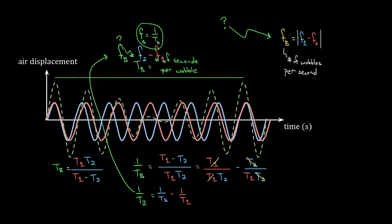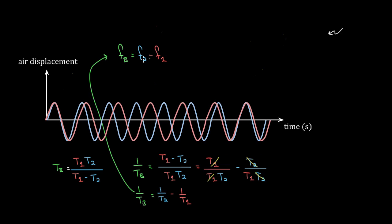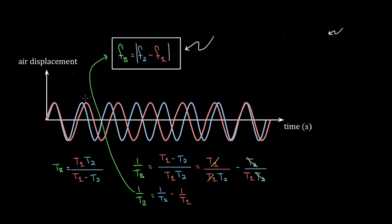This is the formula we were trying to find — the beat frequency equals f2 minus f1. The reason it works is you had to wait exactly the beat period in order for these peaks to get back into phase again — you had to wait for the peaks to get out of phase by one whole period of the second wave. We could also include absolute values in case you don't know which frequency is larger. That's how you determine beat frequency, and that's why the formula looks the way it does.